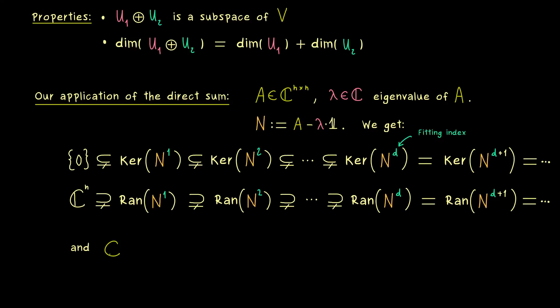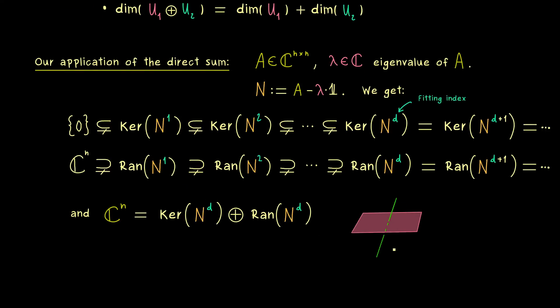Therefore, we can just write C^n is equal to this direct sum. And please note, this direct sum is only correct for the fitting index. And please recall, this means that both subspaces here span completely different directions.